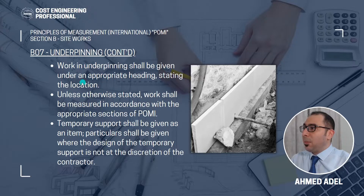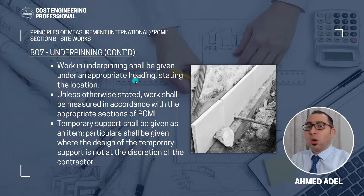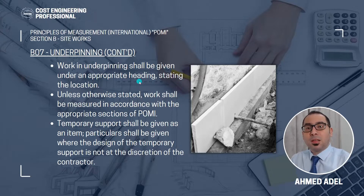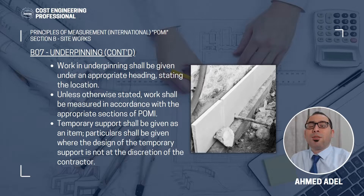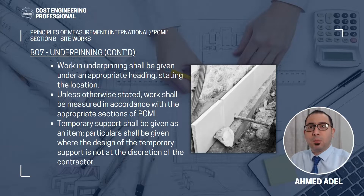Work in underpinning shall be given under an appropriate heading stating the location. We have many headings in the BOQ when making a BOQ in accordance with POMI. The works needed to achieve underpinning should come under the appropriate section for each of them. If the works include some excavation, it should come under excavation. If they include concrete and reinforcement work, they should come in the concrete bill. If you need some dewatering, it should come in the general requirements. You also have to specify the location of the underpinning in the BOQ description.